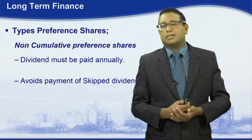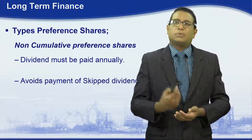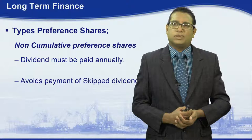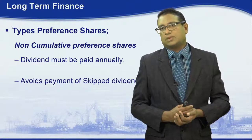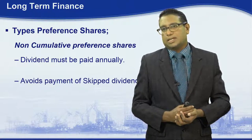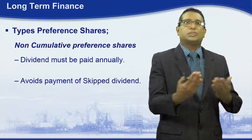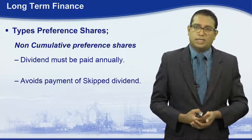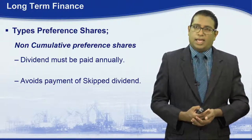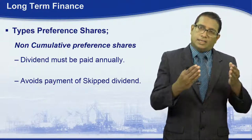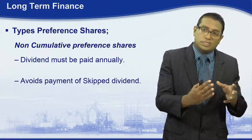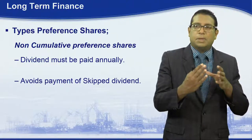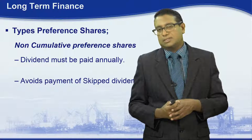The second type is non-cumulative preference shares. The dividend has to be paid annually. The difference with non-cumulative shares is that it avoids the payment of skipped dividends.